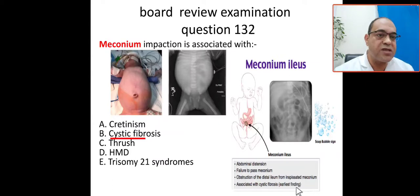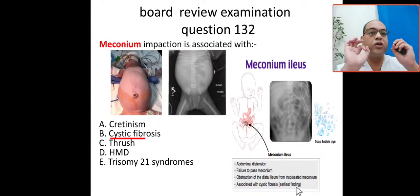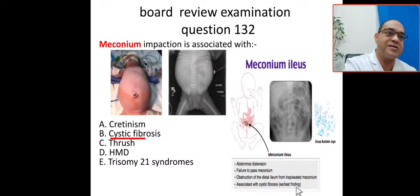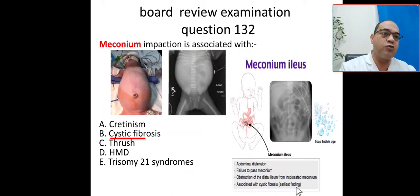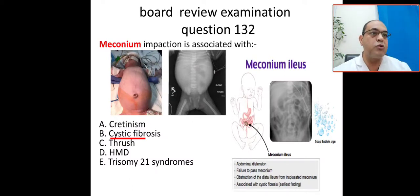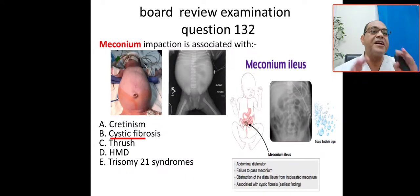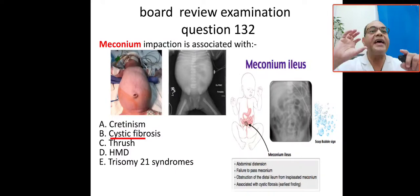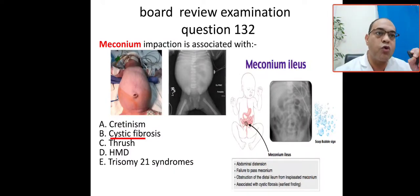Meconium ileus is associated with cystic fibrosis — this is the earliest finding. Meconium impaction is common with cystic fibrosis in 20% of cases. The patient presents with abdominal distension, and on inspection there is peristaltic movement. On palpation of the abdomen there are palpable bowel loops. X-ray signs include paucity of abdominal gases, absent gas in the rectum, and soap bubble appearance in the lower abdomen.